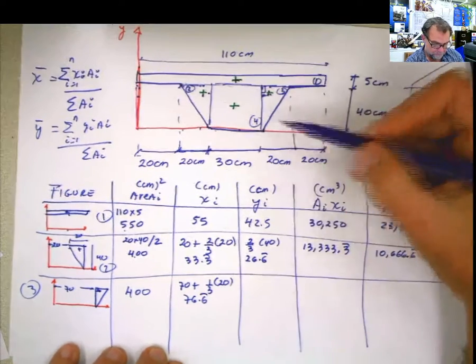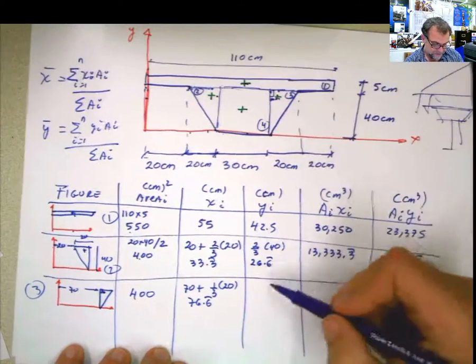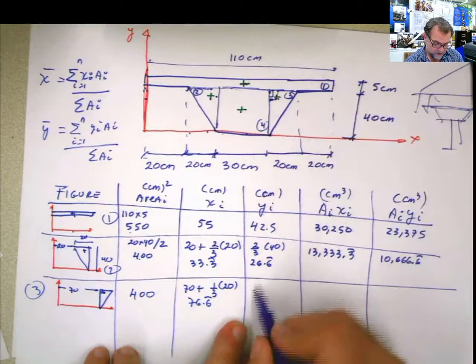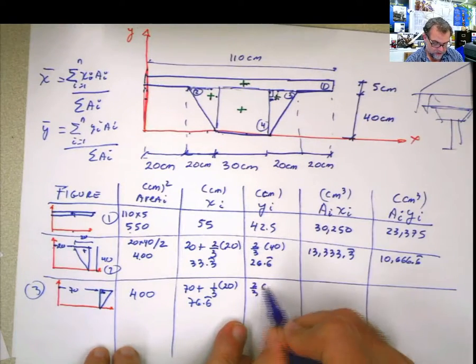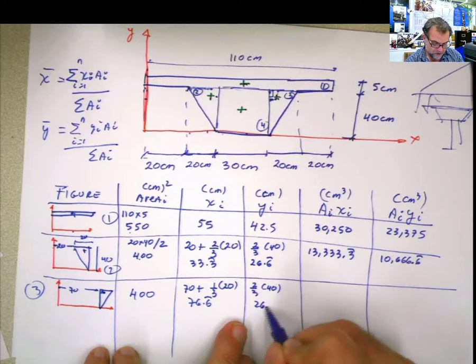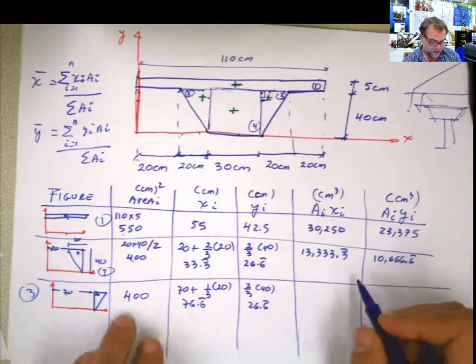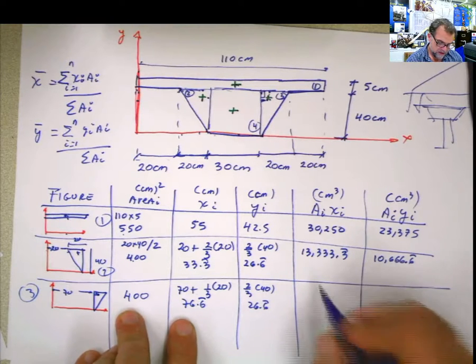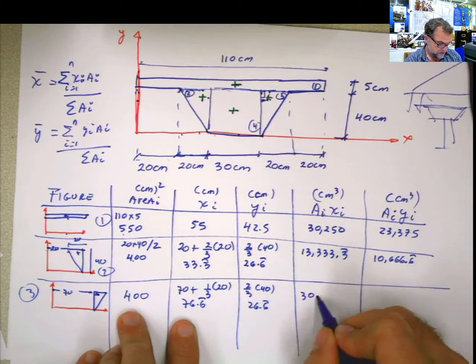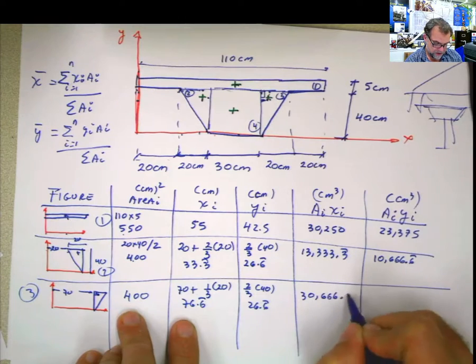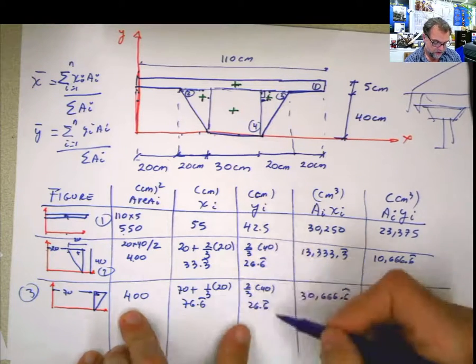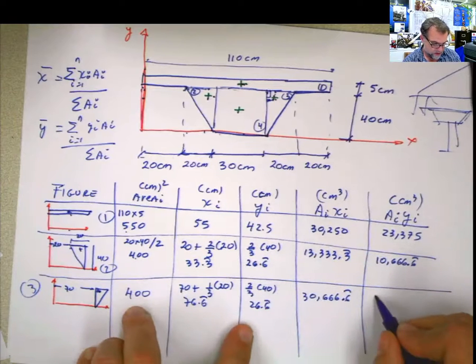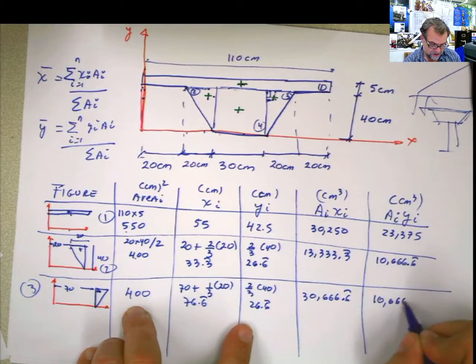In y, it's the same. Same triangle, just flipped from here to here. 2 thirds of the base, 26.6 periodic. Multiplications, 400 times 76.6. That's 30,666.6. 400 times 26 is the same 400 times 26 here. So 10,666.6.